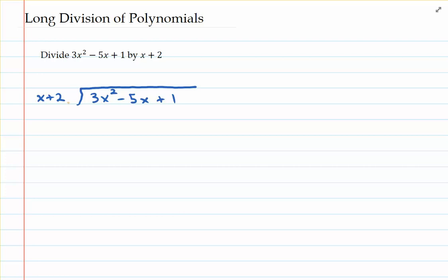What you want to take a look at first are the first two terms in each of these polynomials. Looking at the dividend, the first term is 3x squared. And in the divisor, the first term is x. And what you want to do is ask yourself, how many x's would fit into 3x squared? In other words, what could you multiply x by to get 3x squared? Now if that answer is not immediate, don't worry. What you can do is some scratch work. Write 3x squared on top of x and simplify. Now that simplifies to 3x.